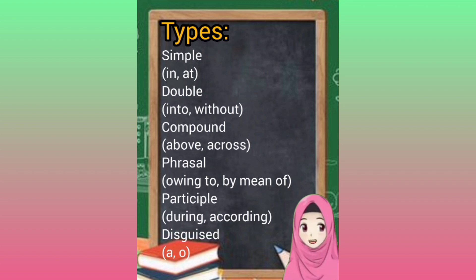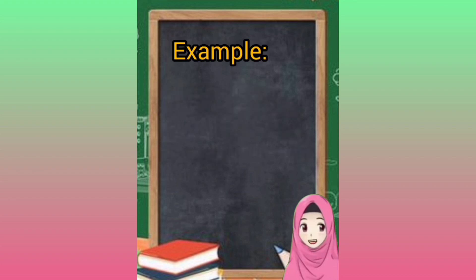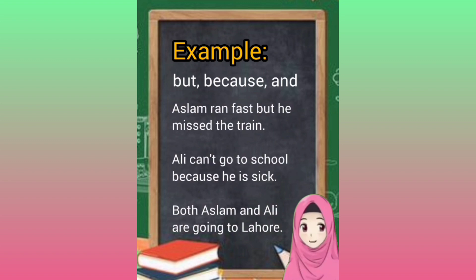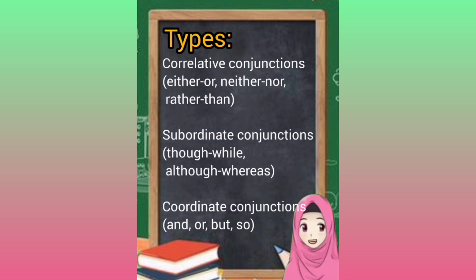Types of prepositions: simple — in, at; double — into, without; compound — above, across; phrasal — owing to, by means of; participle — during, according to; disguised. A conjunction is a word used to join two words, phrases, clauses, or sentences. Examples: but, because, and. Aslam ran fast but he missed the train. Ali can't go to school because he is sick. Both Aslam and Ali are going to Lahore.